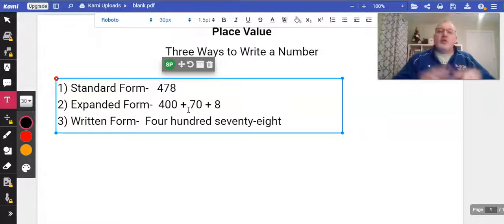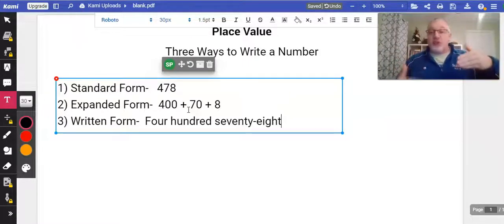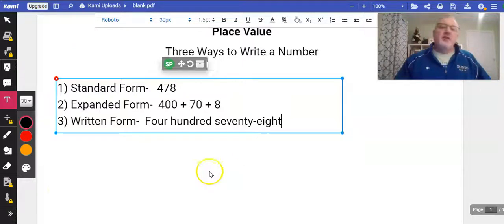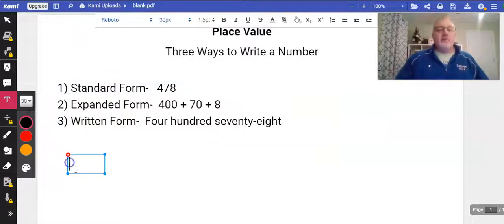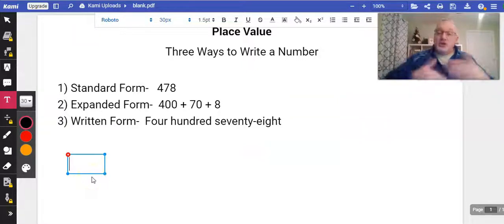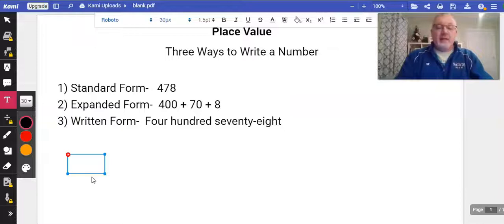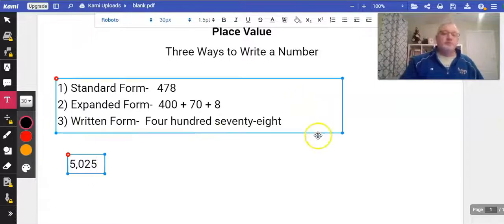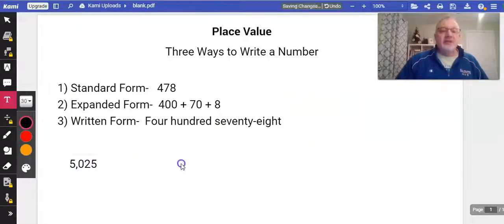Those are the three ways to write a number, and sometimes they want you to convert. There'll be things like they'll give you a number in written form and then you have to do the other two forms. For instance, if I have five thousand twenty-five, that's in written form.